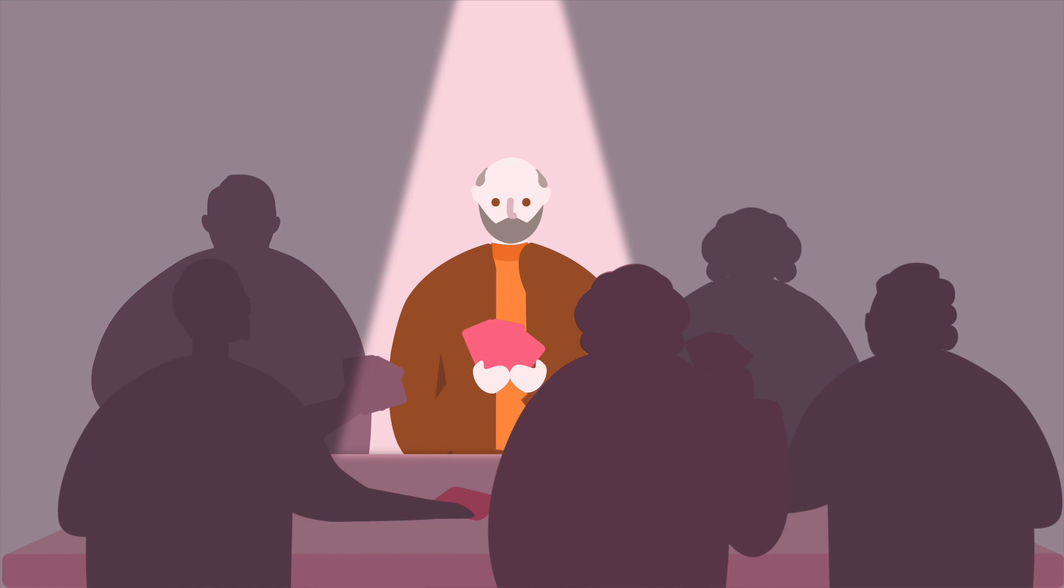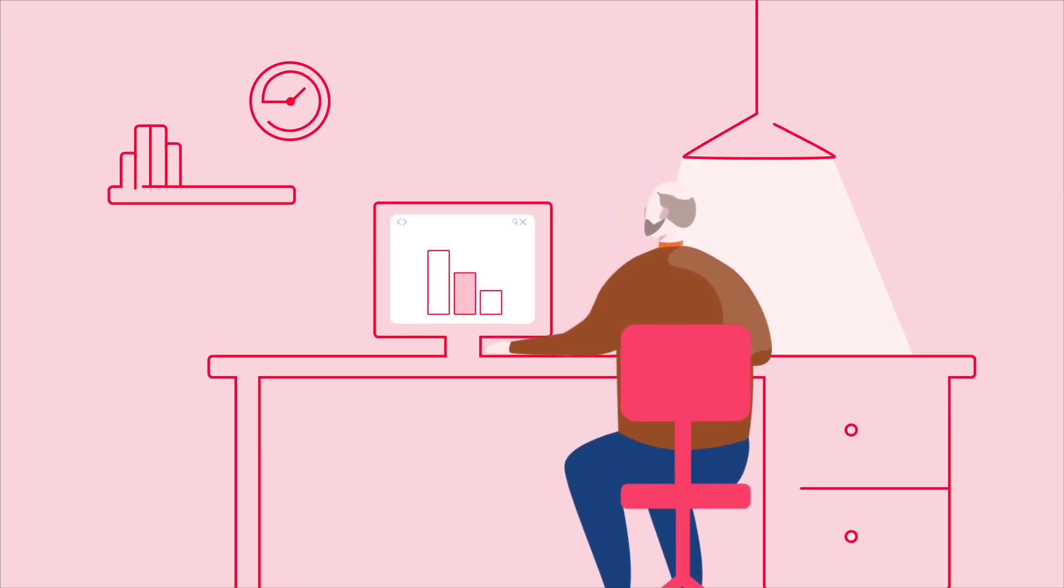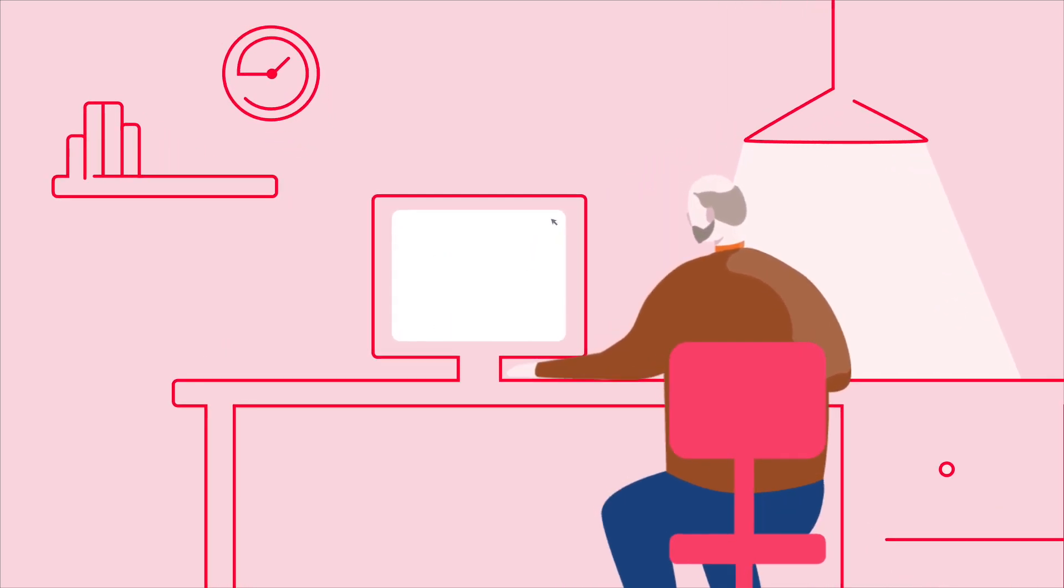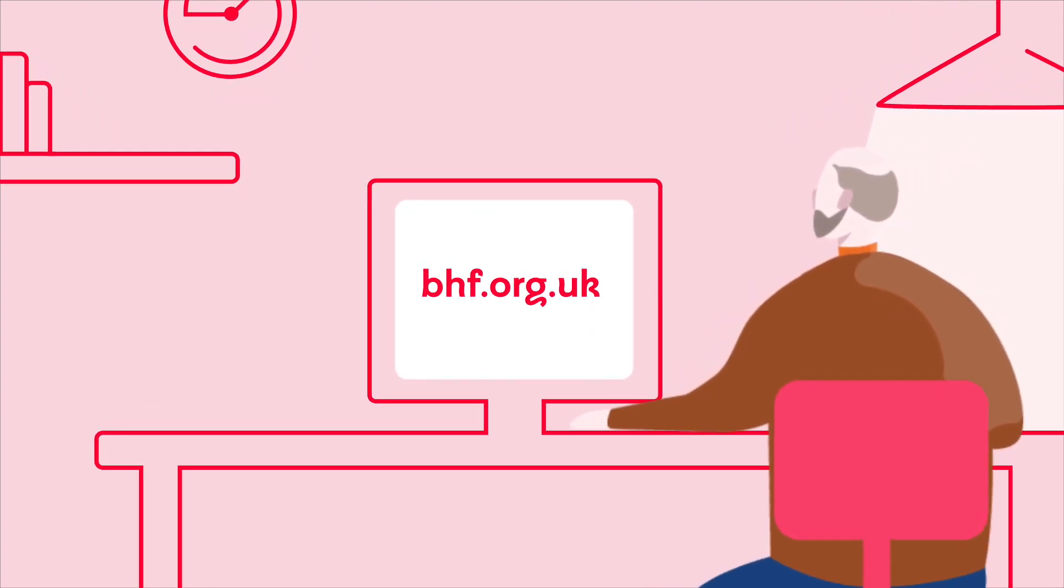One in six people over the age of 80 have dementia. Vascular dementia is the second most common type of dementia after Alzheimer's disease. More information on vascular dementia can be found at bhf.org.uk.